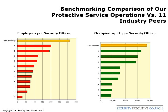We serve 310 employees per security officer, and our closest peer is 200. Similarly, our security operations respond to 75,000 square feet of occupied space, and our nearest peer is 62,000. In both examples, the median spread between our levels of efficiency using these two common criteria and that of multiple peers is significant.